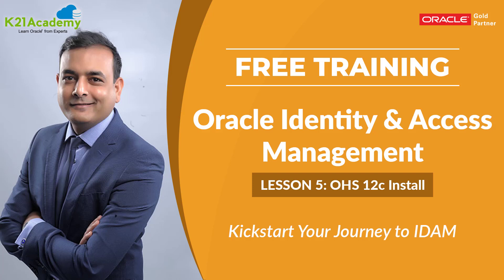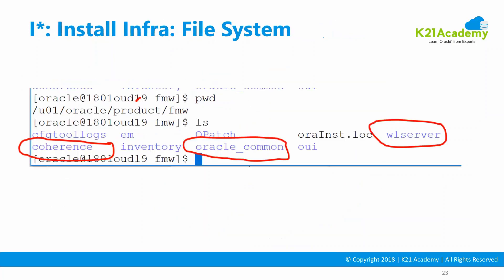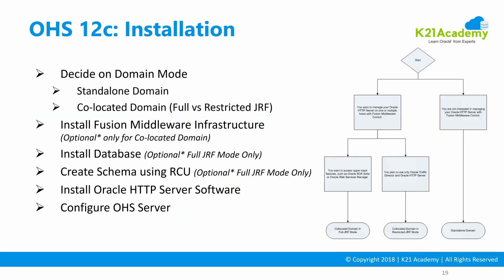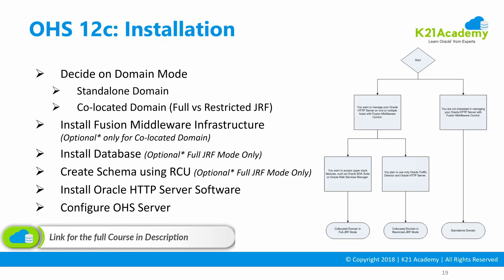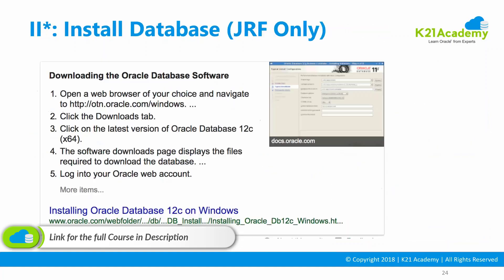Welcome back to this lesson on installing Oracle HTTP Server. To recap the previous lessons: first, you decide what kind of domain you want for Oracle HTTP Server, then optionally install Oracle Fusion Middleware Infrastructure, install the database, and install the schema using the Repository Creation Utility. If you want a standalone domain, you can skip all three of those steps and go straight to installing Oracle HTTP Server.